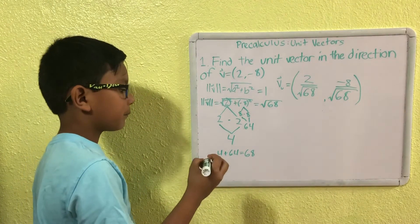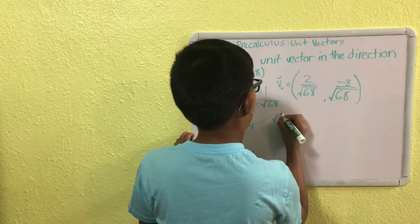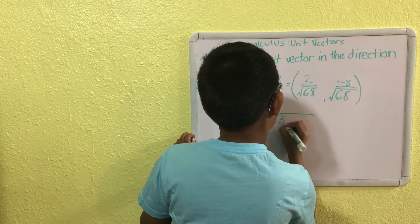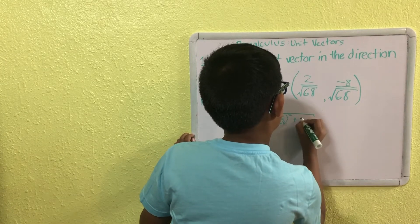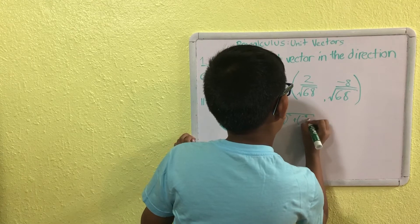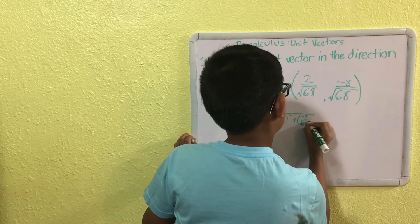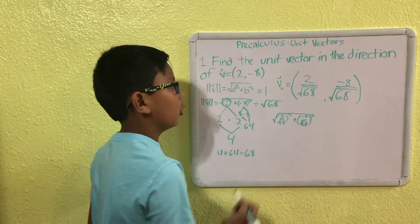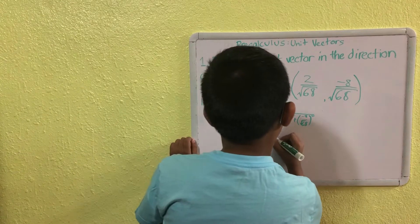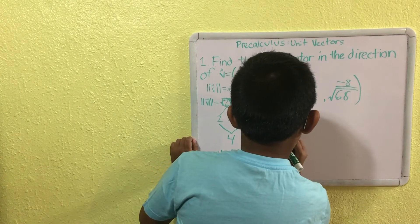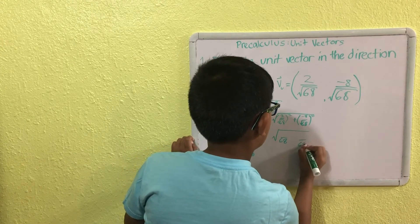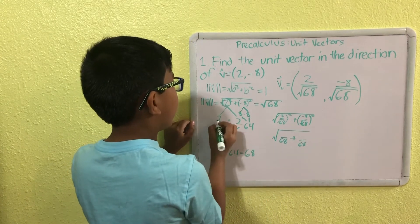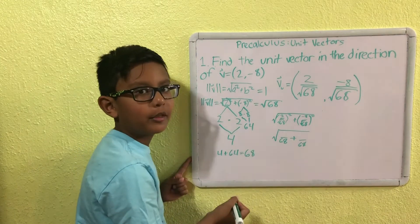Now we check our answer. We take the square root of (2 over √68)² plus (−8 over √68)². If you square a square root, they cancel — so we're left with 68 in the denominator. Now we can add like fractions. 2 squared equals 2 times 2, which is 4.